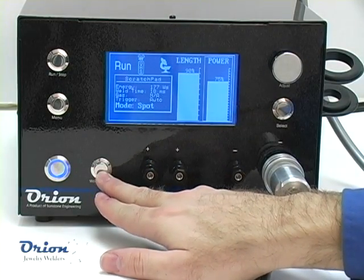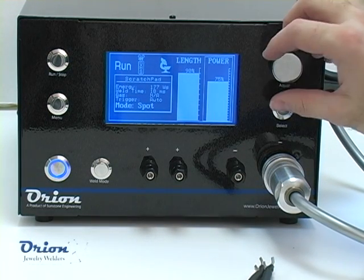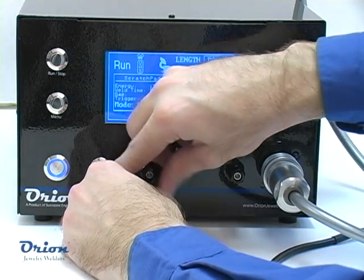Resistance or spot welding uses the electrical resistance of the welding materials to produce heat for the welding process. There are several important parameters in spot welding.